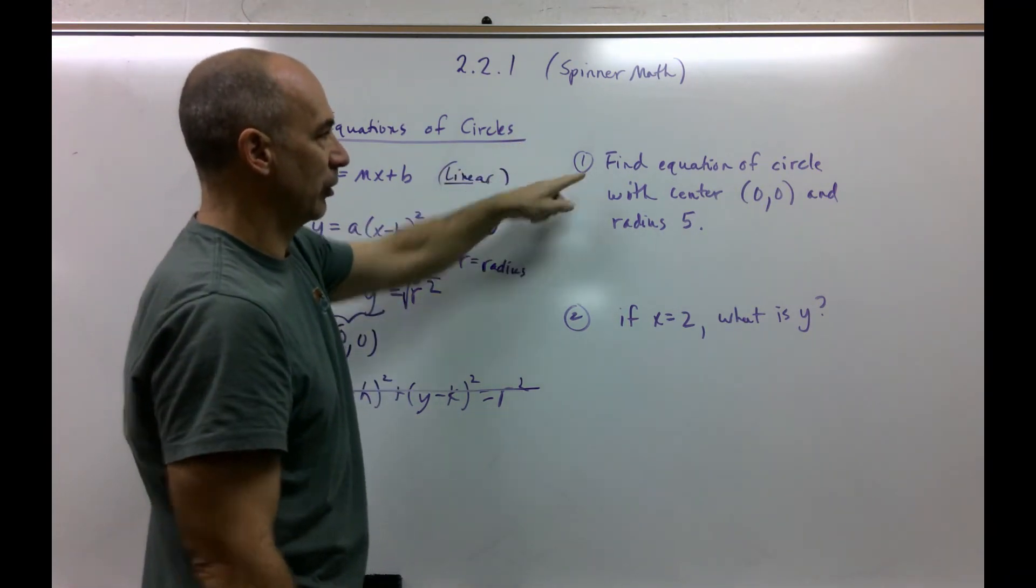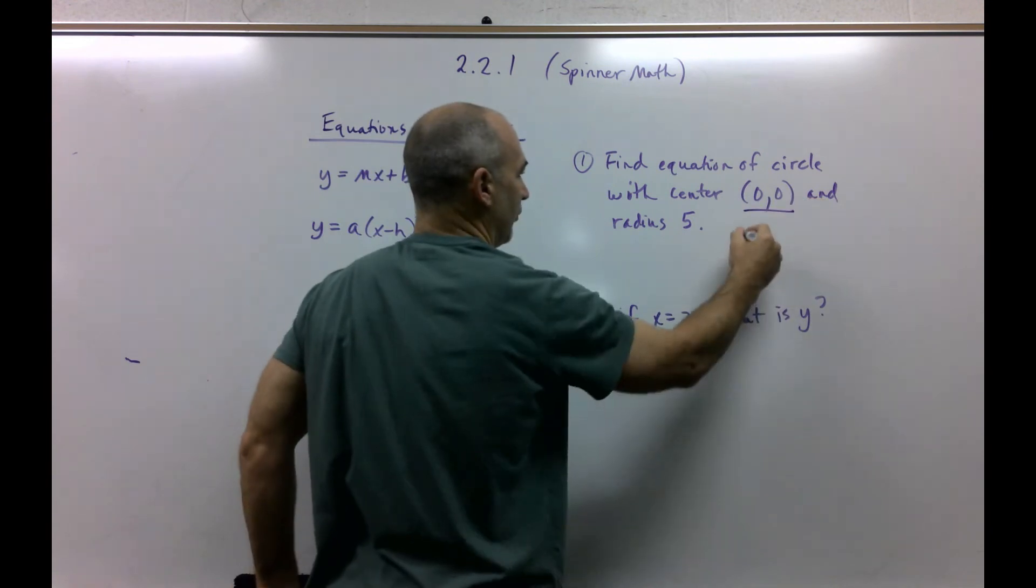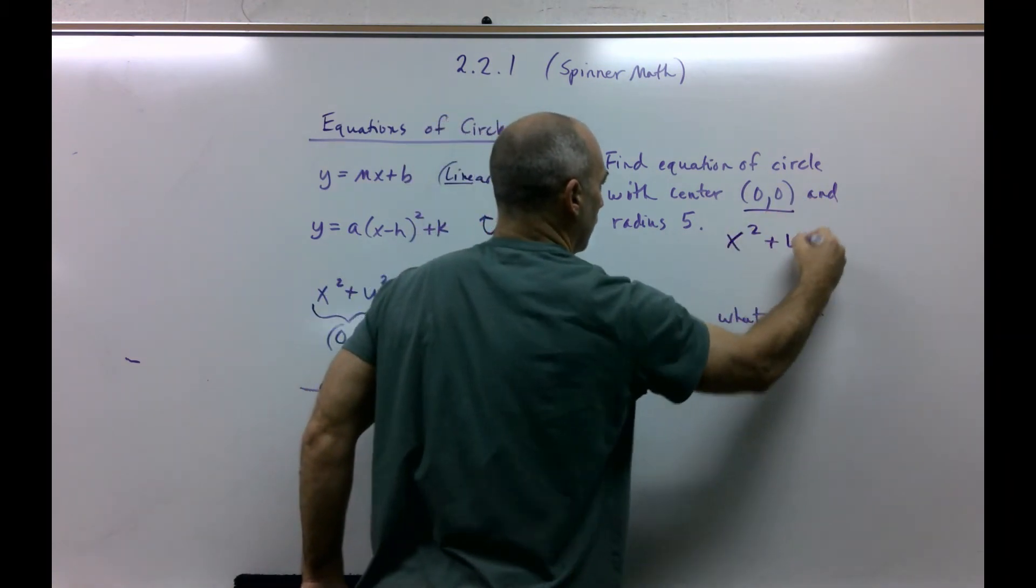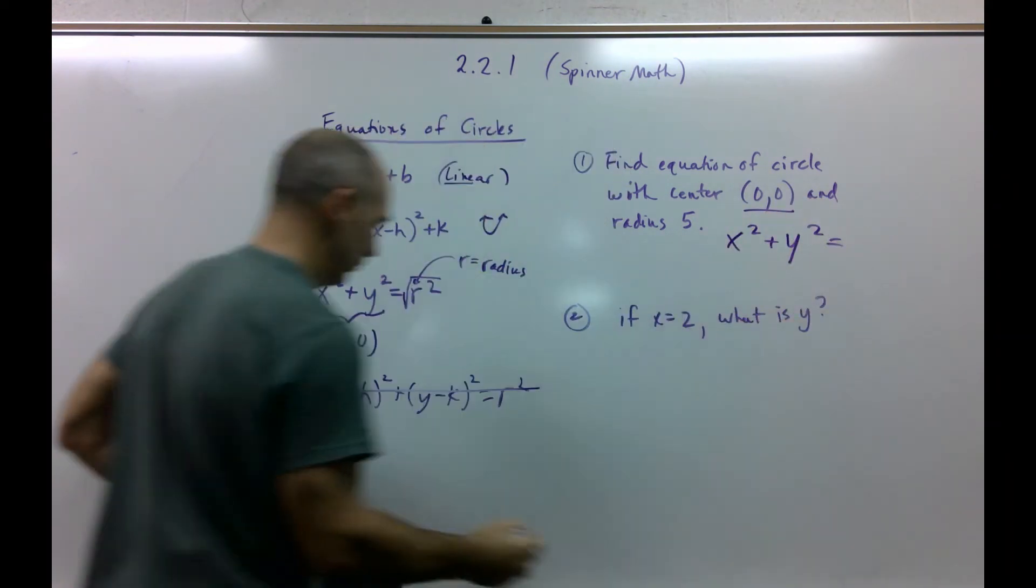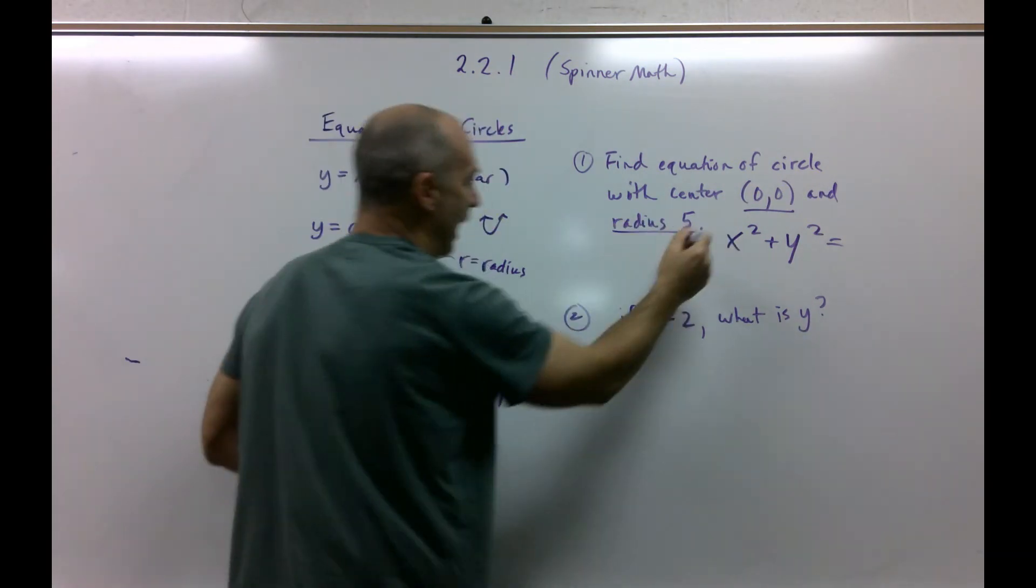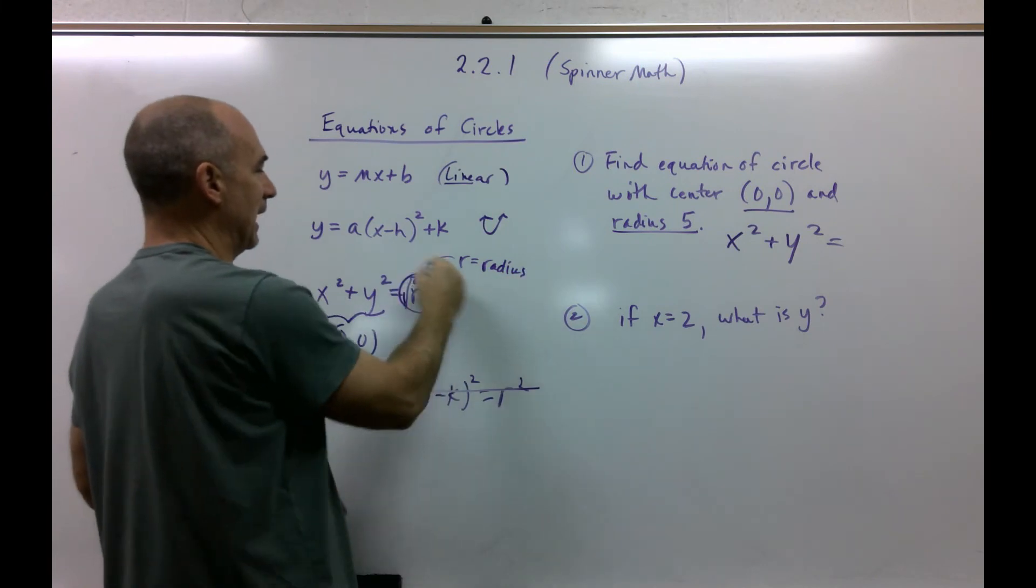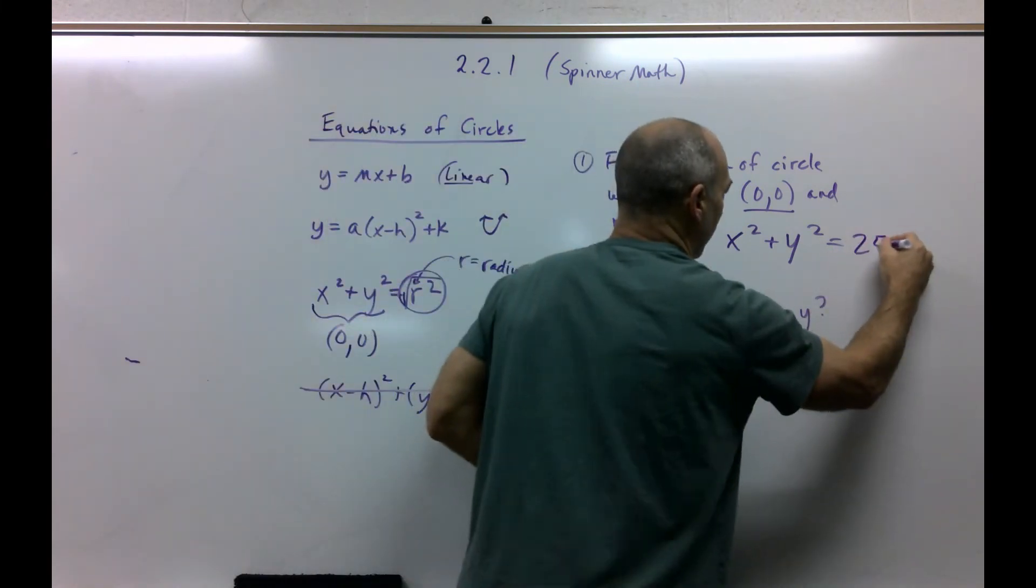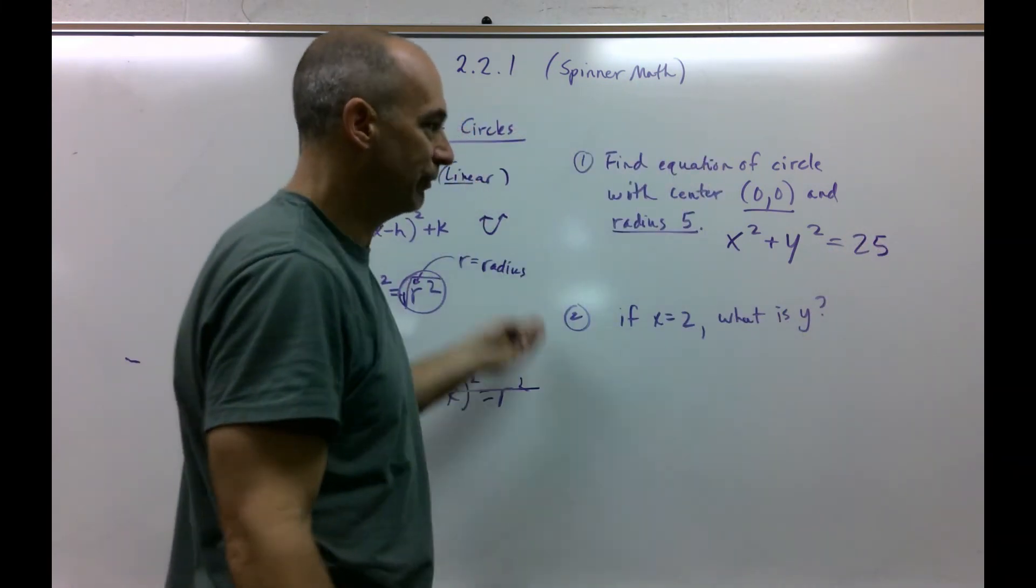So this says, find the equation of a circle with center 0, 0. That's just telling you, don't mess. Don't worry about that. The center is just 0, 0. They're going to start out easy. Radius 5. Well, if the radius is 5, then I've got to square it to figure out the equation of that circle. It's that easy.